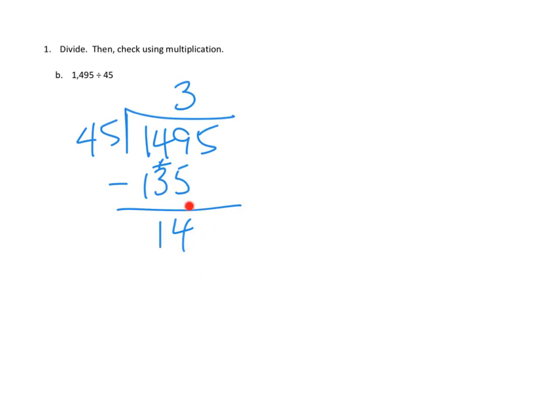I'm going to look at this number and see, could I have made more? And the answer is no. I could not make another group of 45 out of 14. So I'm going to think about these 14 as in fact 140 ones. So I'm going to bring down the rest of my ones. And now I've got a new problem based on ones.